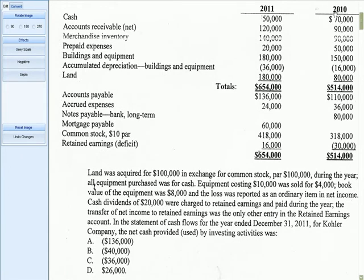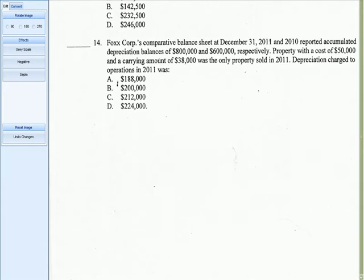We've got 2011 and 2010 data, and we have some transactions that happened to the business. Land was acquired for $100,000 in exchange for common stock, par value $100,000 during the year. Note that land exchanged for common stock has nothing to do with cash. Equipment was purchased in cash — we're given the equipment cost, what it was sold for, the book value, and a loss. Cash dividends were paid. The question is: what was the net cash provided or used by investing activity?